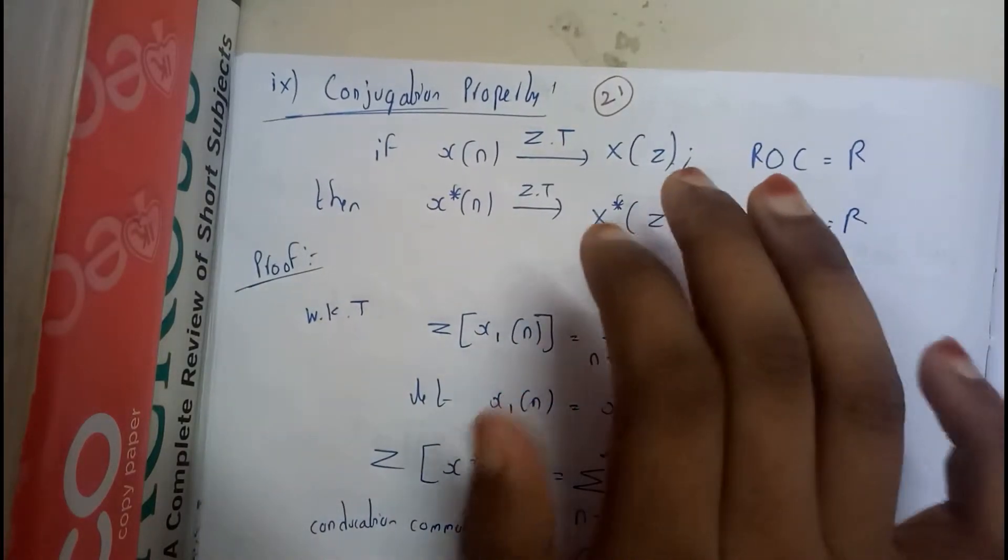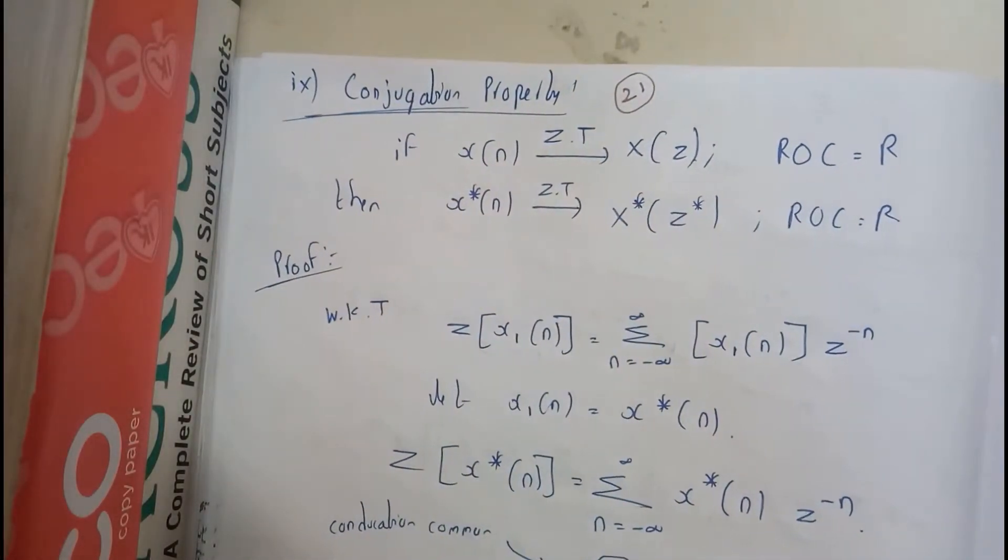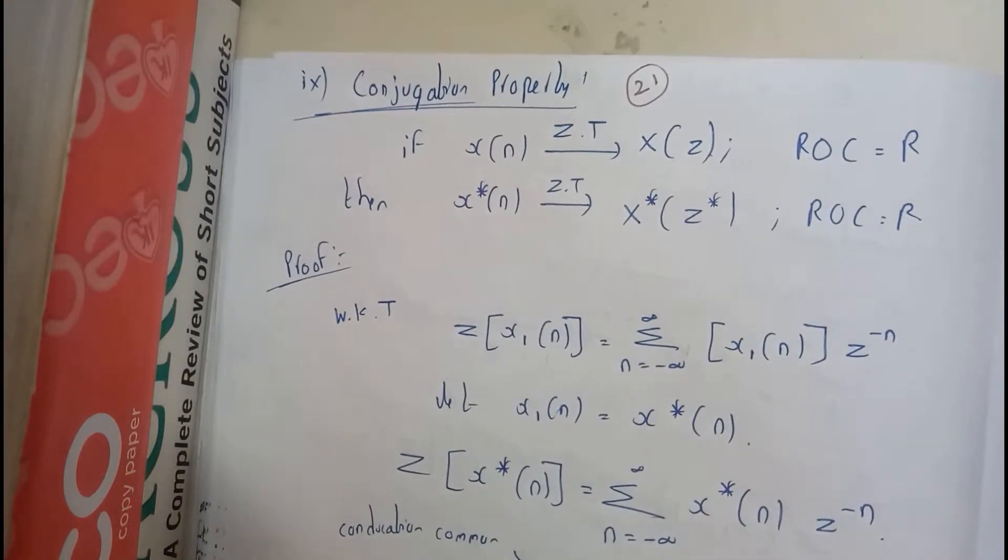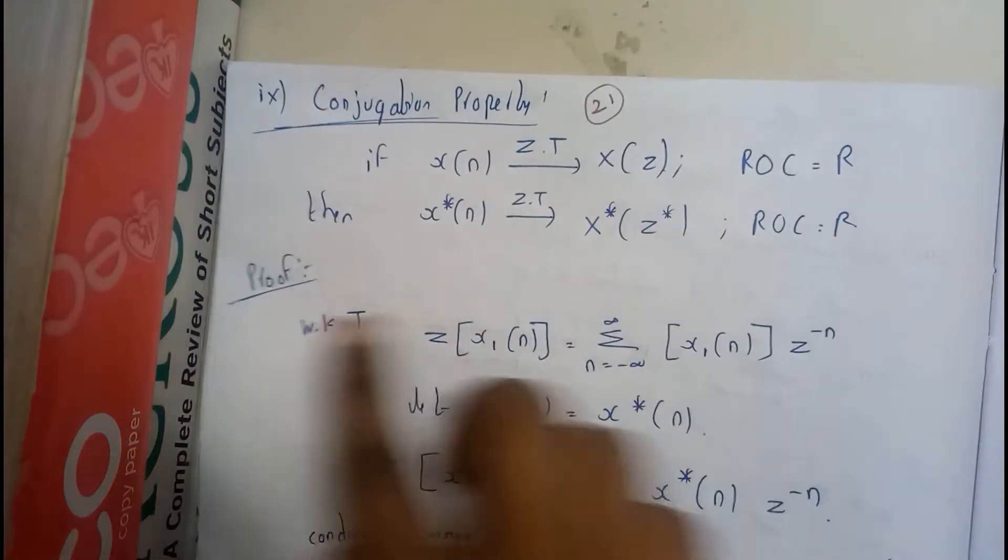So this is a bit confusing to read guys. If you are just observing it, you can understand it clearly. While I am reading, it is not so clear because I cannot pronounce it properly. Okay, so ROC is R.